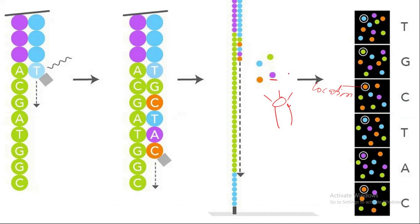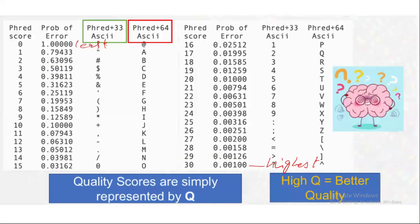When the scanner captures the total intensity of that light and is confident about a specific nucleotide — for example, this purple color is cytosine — it adds that nucleotide into the FASTQ file and gives it a confident score. Confidence scores are denoted by specific symbols. Sanger+33 and Sanger+64 are the two types of encoding algorithms used. In Sanger+33 when the confidence is 0.63 it gives the symbol 'H', and in Sanger+64 the same confidence gives symbol 'B'. This depends on which sequencing technology is being used.